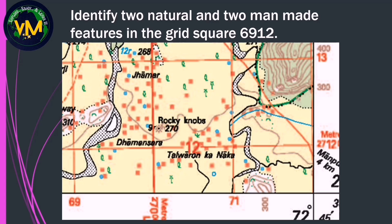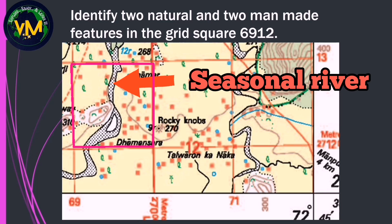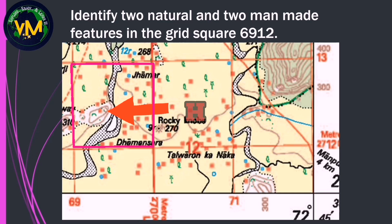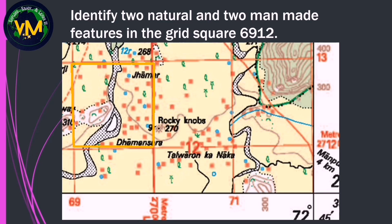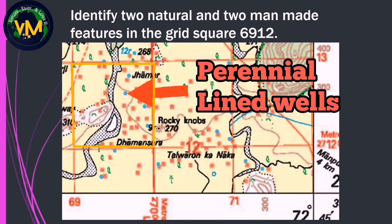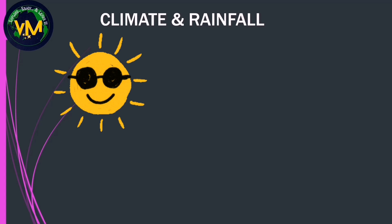Can you identify two natural and two man-made features in grid square 6912? The natural features we can see are a seasonal river and an island in the river. The contour lines represent a hillock, which is smaller than a hill. For man-made features, we have a group of permanent huts as a settlement, blue dots which are perennial lined wells, and a broken red line which is a pack track.